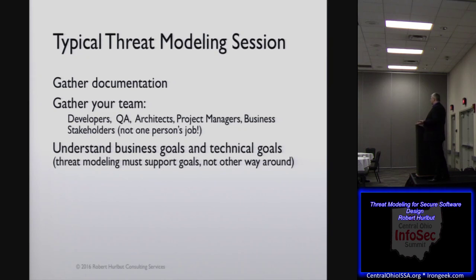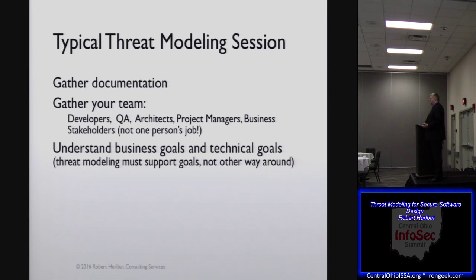Technical goals — understand your environment. A Java system has its own set of security issues and security environments. A .NET system, same way. All have certain environmental things that are in place for security or not in place for security. So understand those and why do we choose to run it on this system versus another system, in the cloud now versus not — they all impact how we build our threat model and the risks that might be involved with those decisions.